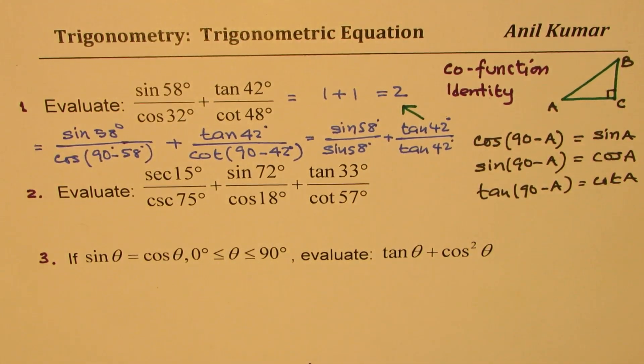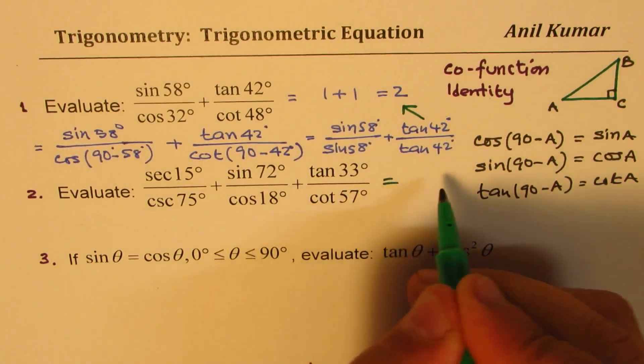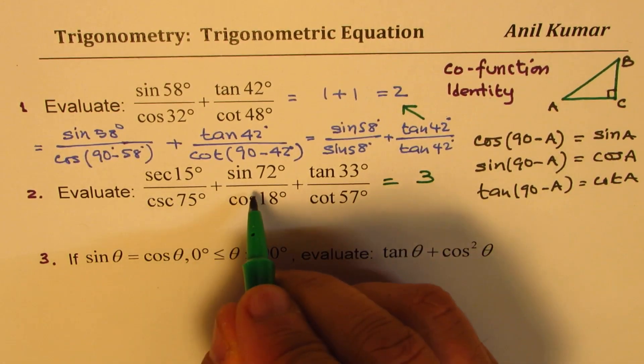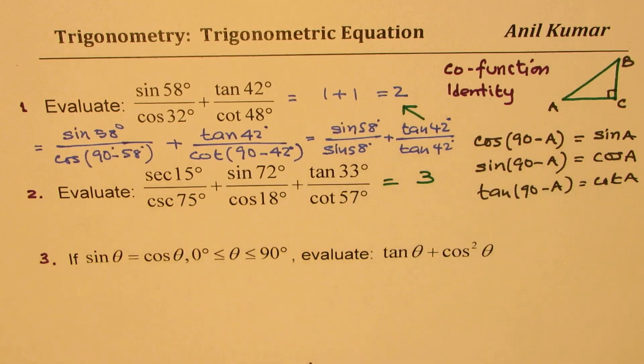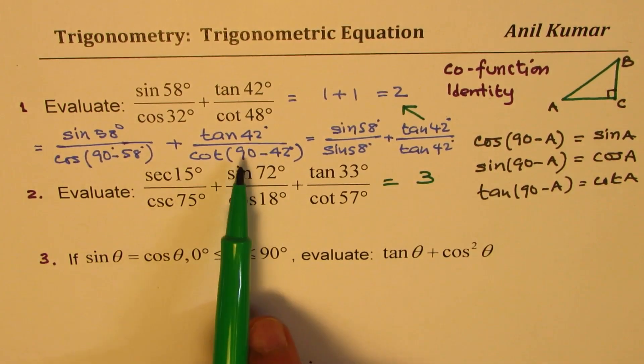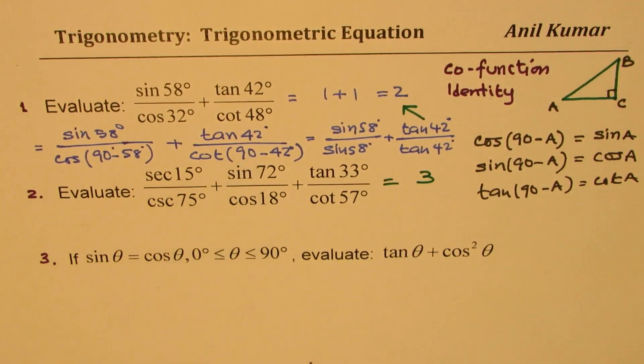You understand the concept. So it is basically a co-function identity which needs to be applied. So you could apply this identity and take this as your test question. And obviously, the answer here we're looking for is equal to 3. So 1 plus 1 plus 1. They all are equal. The method is exactly similar to what I did.